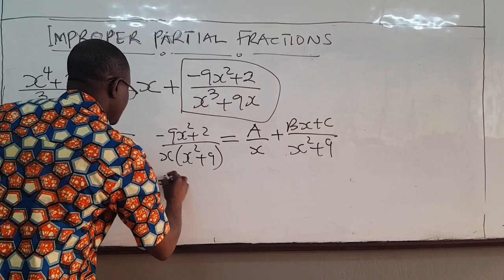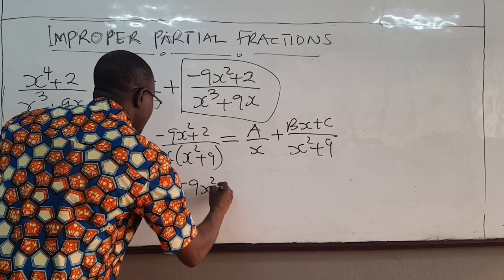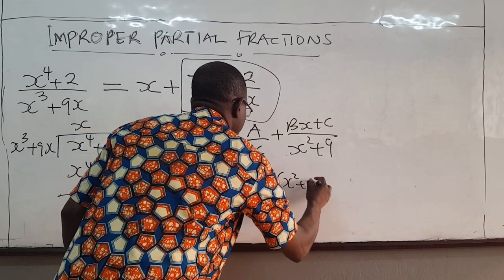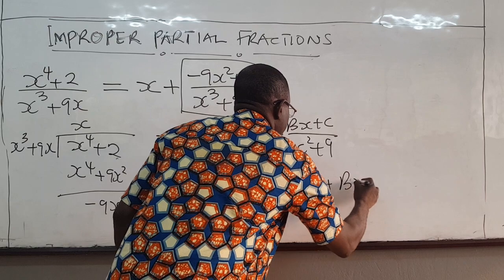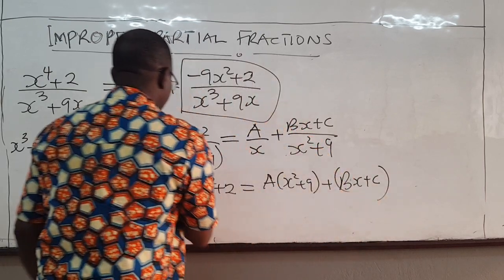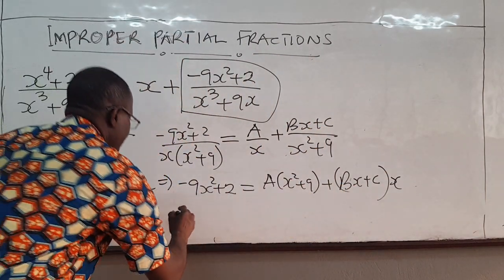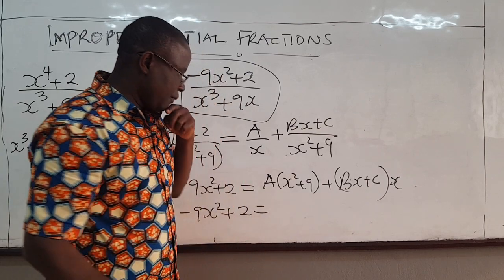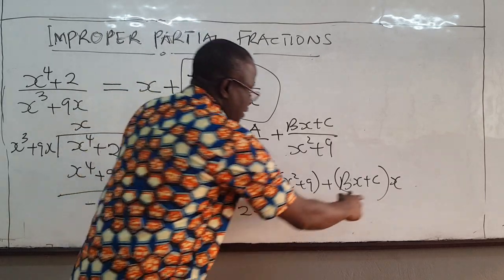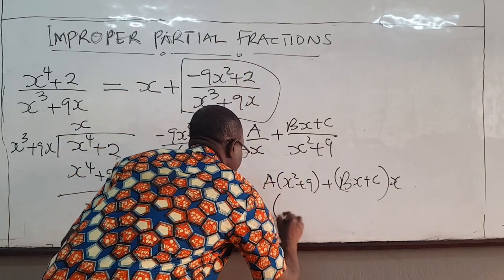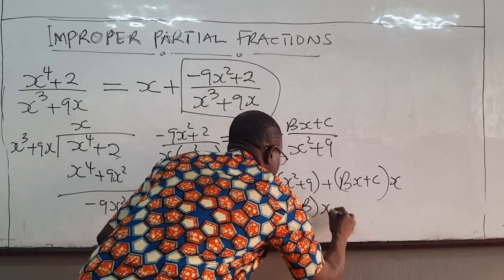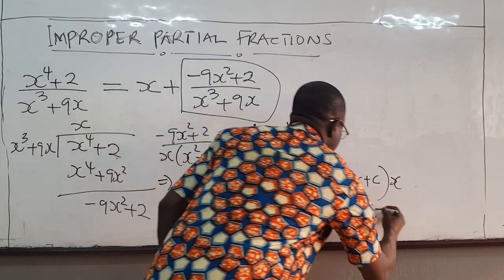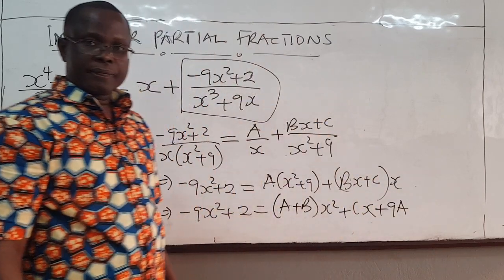So I have negative 9x squared plus 2 is equal to a here into x squared plus 9 plus, this is bx plus c, this is going to multiply x. So we have negative 9x squared plus 2 would be equal to, I'm going to prove this already, this and this will give me a x squared, this and this will give me bx squared. So I'm going to have a plus b x squared. I have an x term here, cx, here I have a constant term 9a.